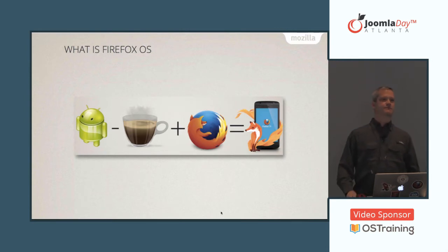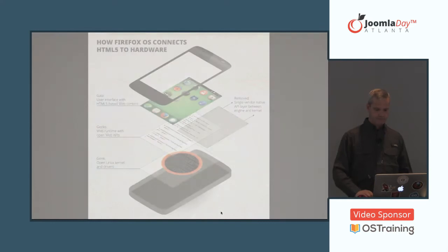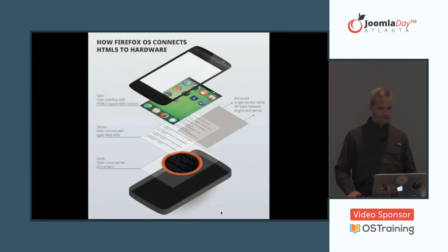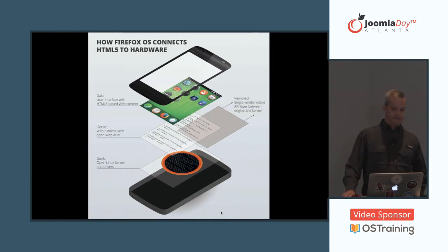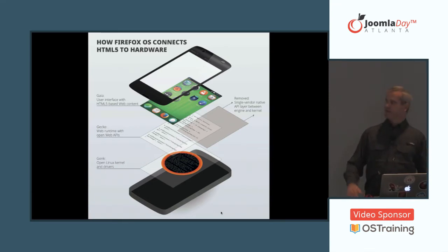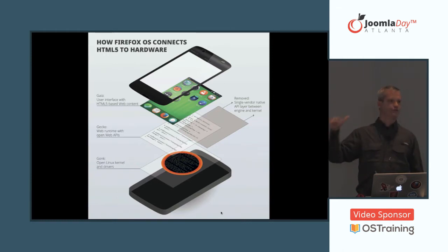Everything in the operating system is written in HTML5. If you write an app for it, you write it in HTML5. If you manipulate the system, that's HTML5. And when I say HTML5, I'm being inclusive of CSS and JavaScript. There are essentially three layers that make up Firefox OS. There's the GONC layer, which is the lowest layer — essentially a Linux kernel, much like Android.